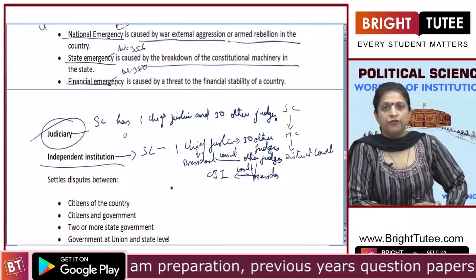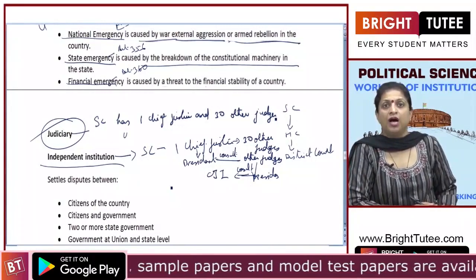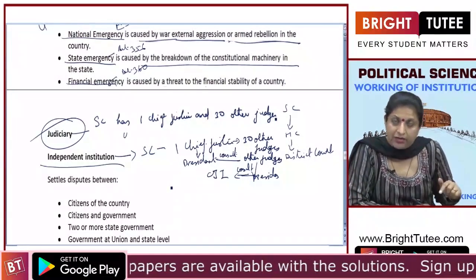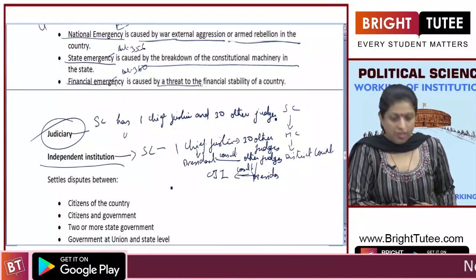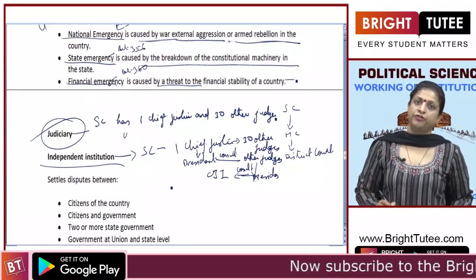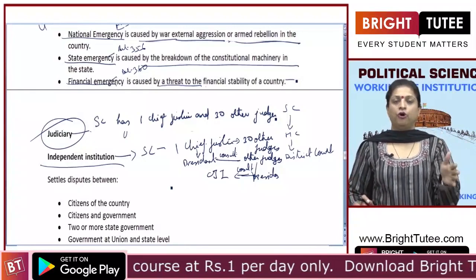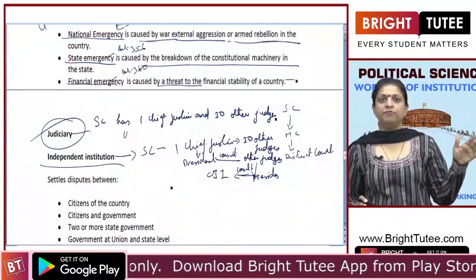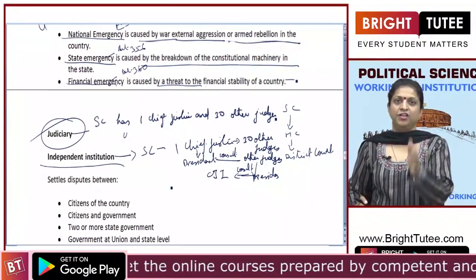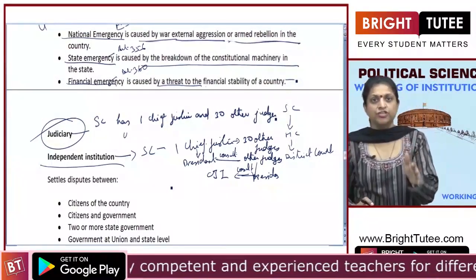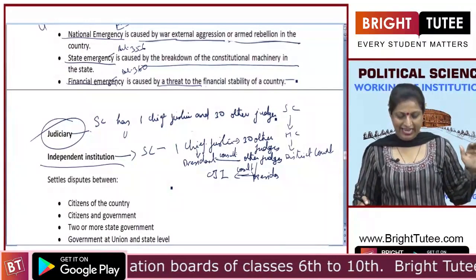Once appointed, it is very difficult to remove these judges. Just as the procedure for impeachment of the President requires a resolution passed by both Houses, it is similarly not easy to remove the judges of the Supreme Court and High Court. This procedure has been made difficult to maintain the independence of the judiciary, ensuring that the judiciary has no contact with the legislature or executive, which could lead to biased decisions.